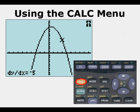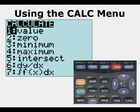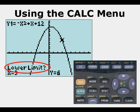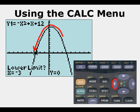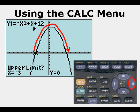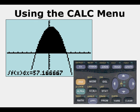Going to second trace, option 7, we do integral calculus. It asks first for the lower limit; we arrow over to the left x-intercept at negative 3 and press enter. Then it asks for the upper limit; we arrow over to the right x-intercept and press enter. We press enter again, see a darkened shaded area, and this number represents the area under the curve — integral calculus.